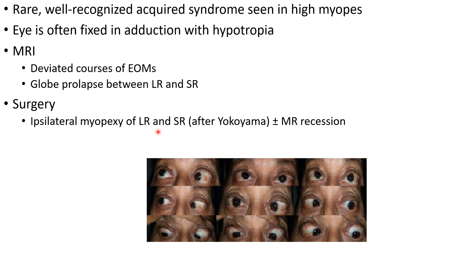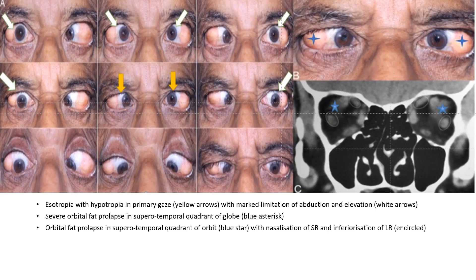The surgery performed is ipsilateral myopexy of the lateral rectus and superior rectus, called the Yokoyama procedure, with or without medial rectus recession. If you notice in this nine-gaze photo, the primary gaze shows bilateral esotropia with hypotropia, with marked limitation of abduction and elevation.